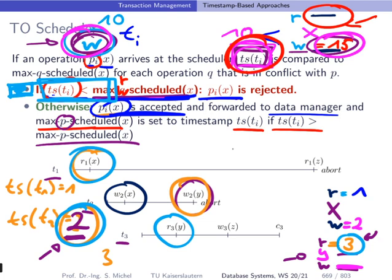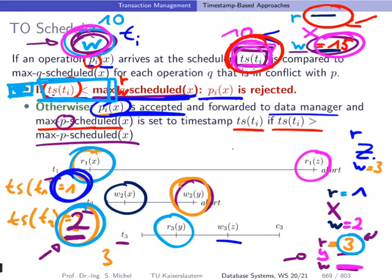The next command is a write operation on object Z by T3. Initially nothing is stored for Z, so the operation is granted and max W scheduled for Z is updated to 3. Finally, T1 wants to read from Z. Since read conflicts with write, we compare timestamp 1 of T1 to max W scheduled of Z, which is 3. Since 1 is strictly smaller than 3, this condition kicks in and the read is rejected — so transaction T1 is also aborted.